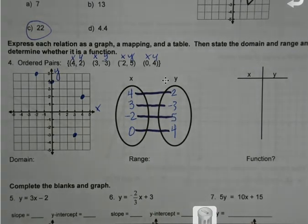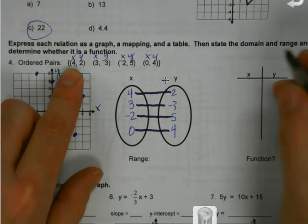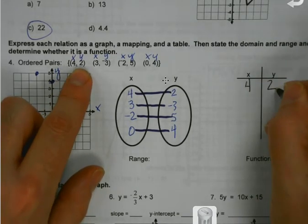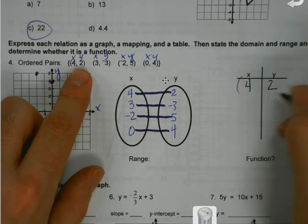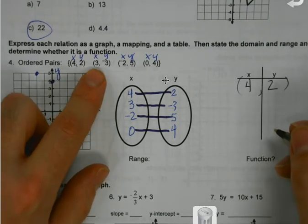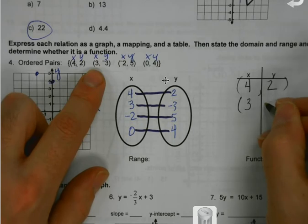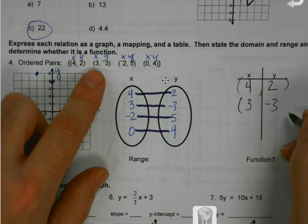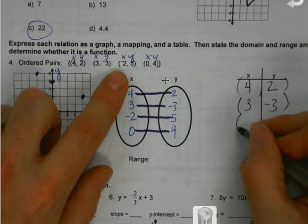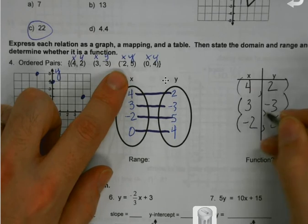These points are just like coordinate points — x, y. They're like creating coordinates: 3, negative 3. I don't have to put the parentheses, but I'm just letting you see. They're like creating coordinate pairs.